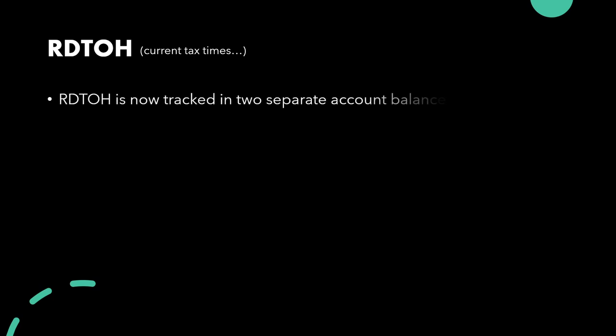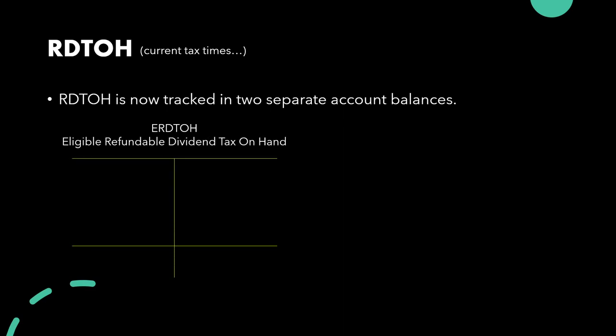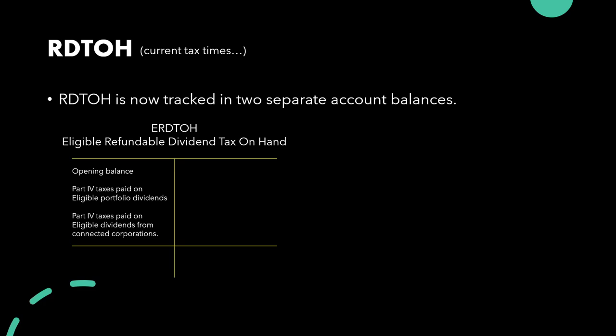If we move on to current tax times, things are quite different. RDTOH is now tracked in two separate account balances. We have Eligible Refundable Dividend Tax on Hand, or ERDTOH, which has an opening balance, and then we have Part 4 taxes paid on eligible portfolio dividends. Portfolio dividends were defined in lecture, and we have Part 4 taxes paid on Connected Corporations to the extent that such dividends included a refund from the paying corporation's eligible RDTOH.